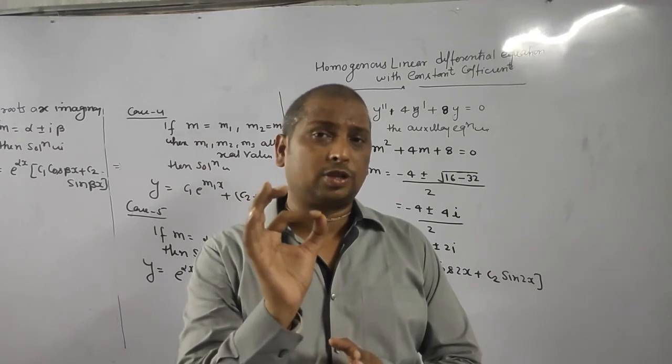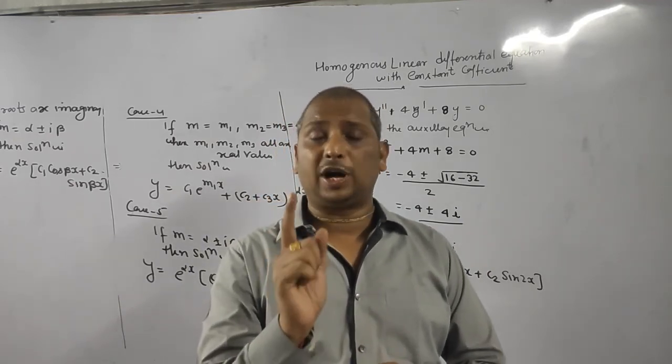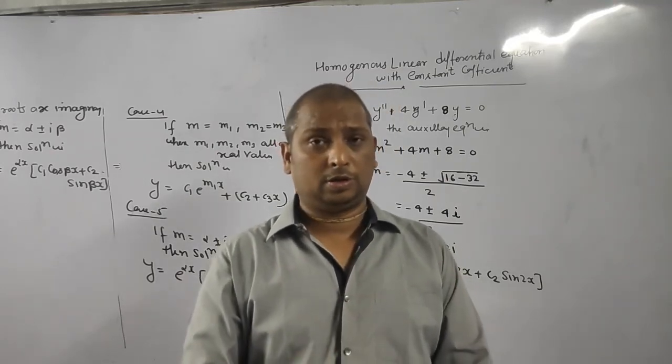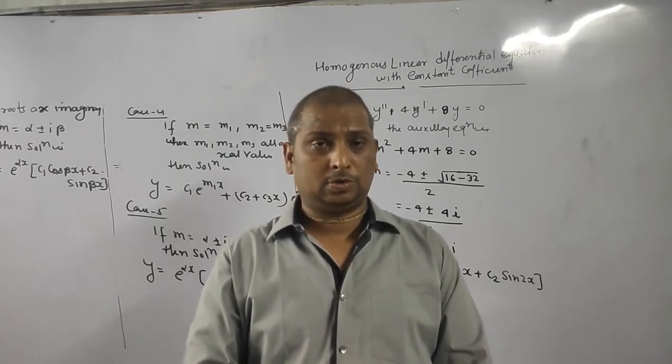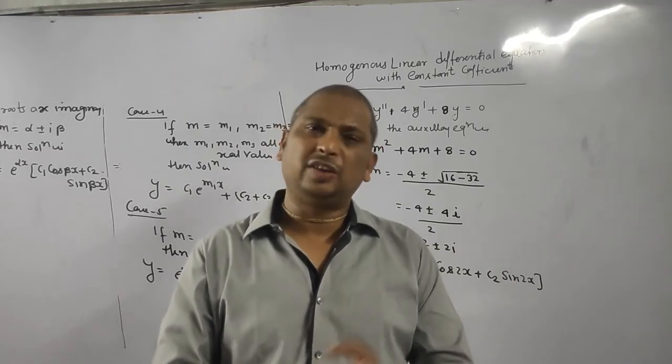First step, write auxiliary equation. How we write auxiliary equation? Just replace y by 1, y dash by m, y double dash by m square and so on. Once you written all, you got auxiliary equation.